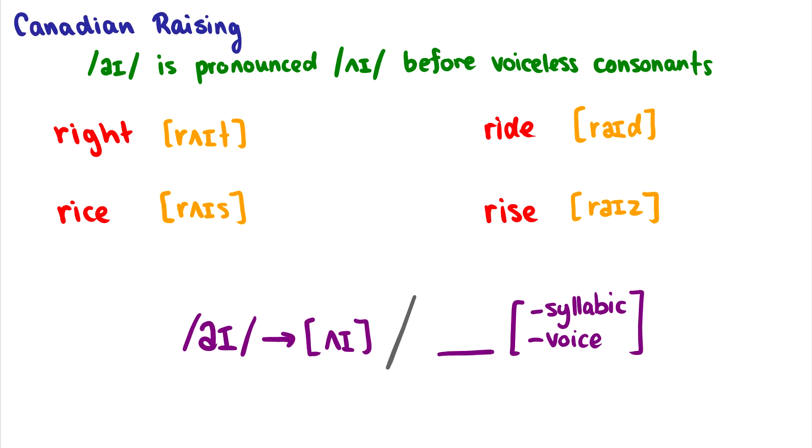Finally, the one that is closest to home with me is something called Canadian raising. And this is an example I will definitely use again in the future. So we have this raising before voiceless consonants with the sound I. So there is a difference when I speak between the words right and ride, or rice and rise. There's a difference in the vowel there. And what's causing that change? Well, it is the voiceless consonants that come after it.